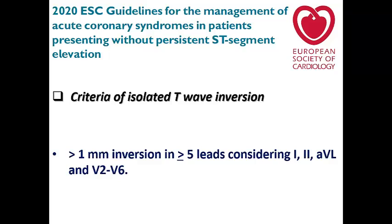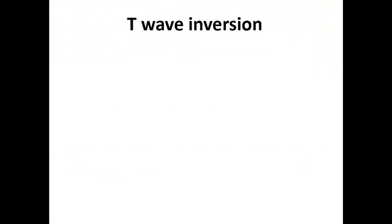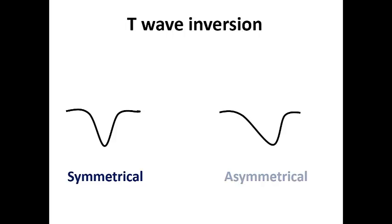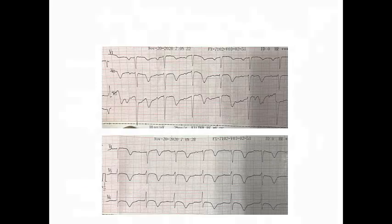T-wave inversion in fewer than 5 leads is not clinically insignificant — you should respect them, perform serial ECGs to detect dynamic change, and arrange invasive coronary angiography if the clinical presentation is suggestive. Symmetrical T-wave inversion is more clinically significant if it is more than 5 mm in depth — called deep symmetrical T-wave inversion. T-wave inversion of more than 1 mm is just T-wave inversion; more than 5 mm is deep T-wave inversion.